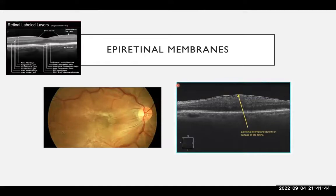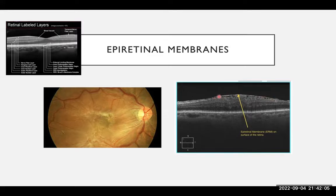Moving on to epiretinal membranes — these are abnormal membranes that can develop and grow over the macula. You can see this white area over the surface of the macula, and in the OCT scan you can see this is an abnormal macula which is very much thickened with a membrane that has grown over the surface. This membrane is like having cling film on the macula, which then distorts the anatomy of the macula and subsequently distorts its function — patients will therefore also have potentially distorted vision.